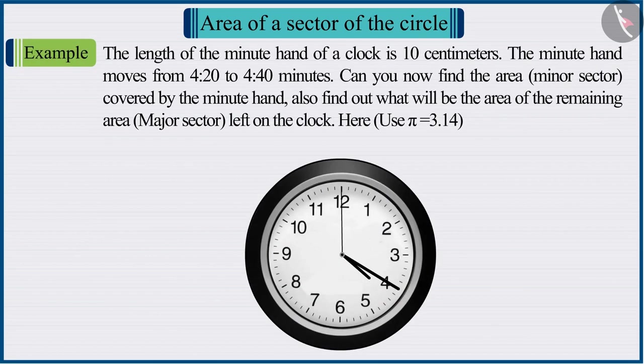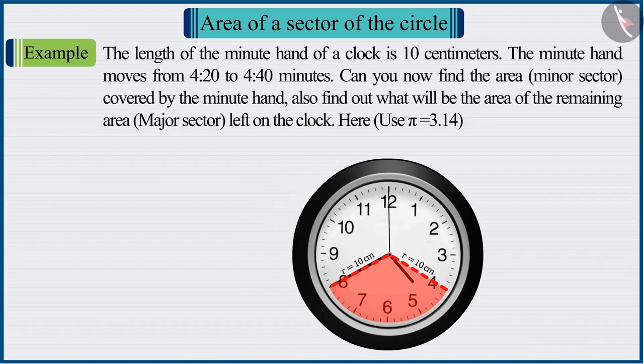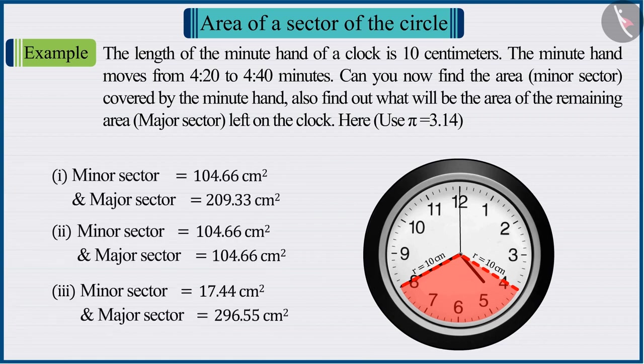The length of the minute hand of a clock is 10 cm. The minute hand moves from 4:20 to 4:40 minutes. Can you now find the area covered by the minute hand? Also, find out what will be the area of the remaining portion left on the clock. Here, use the value of pi as 3.14.